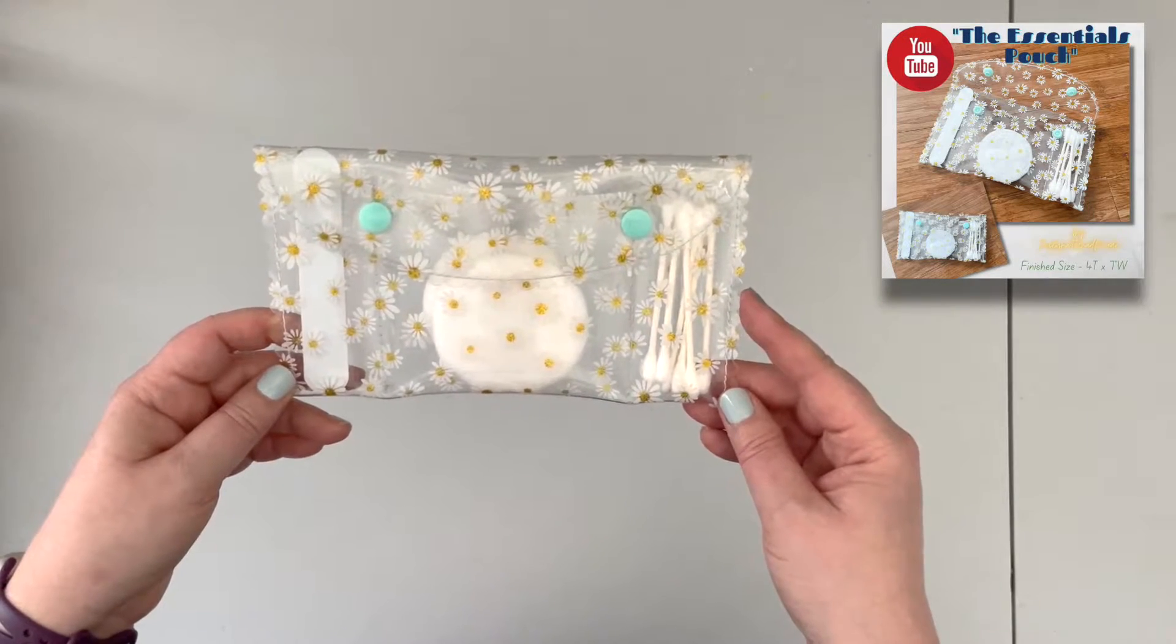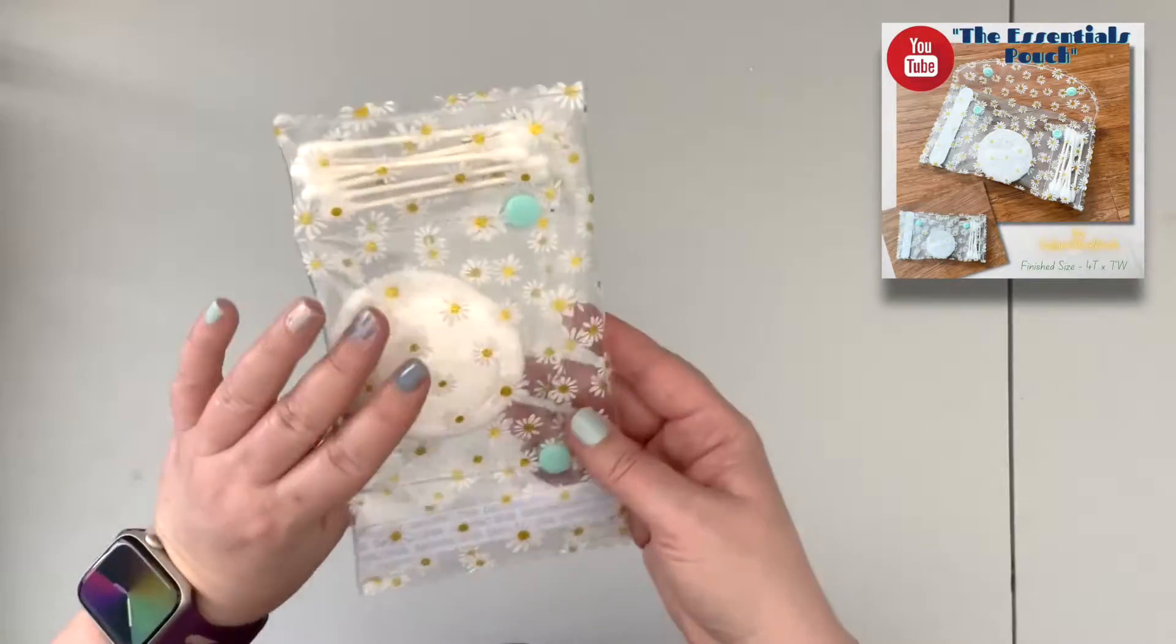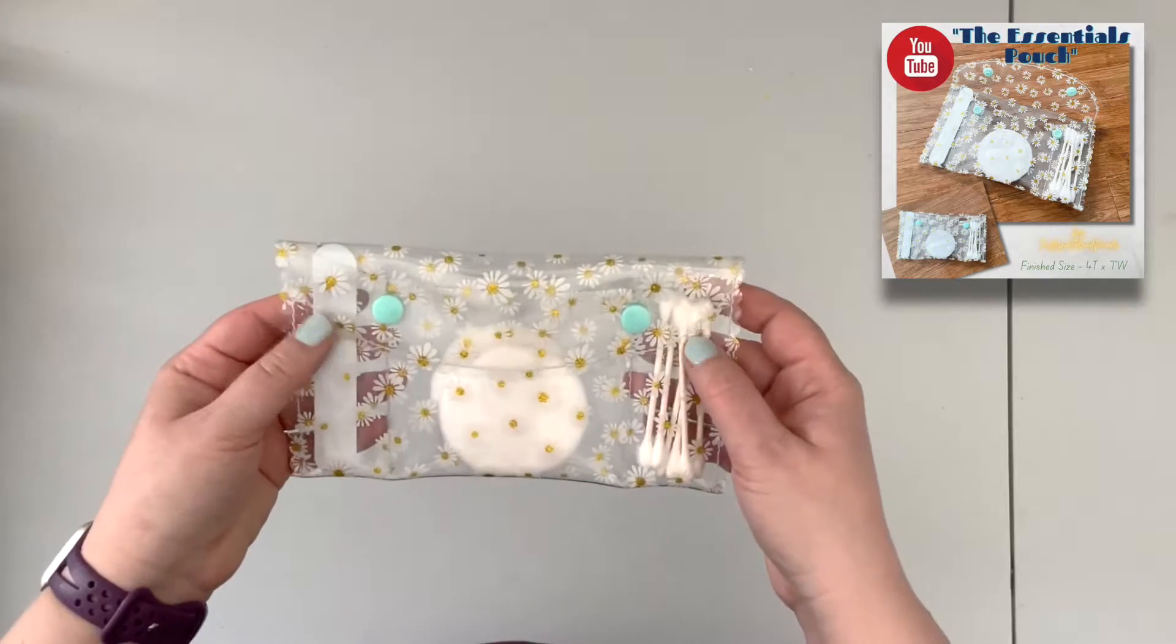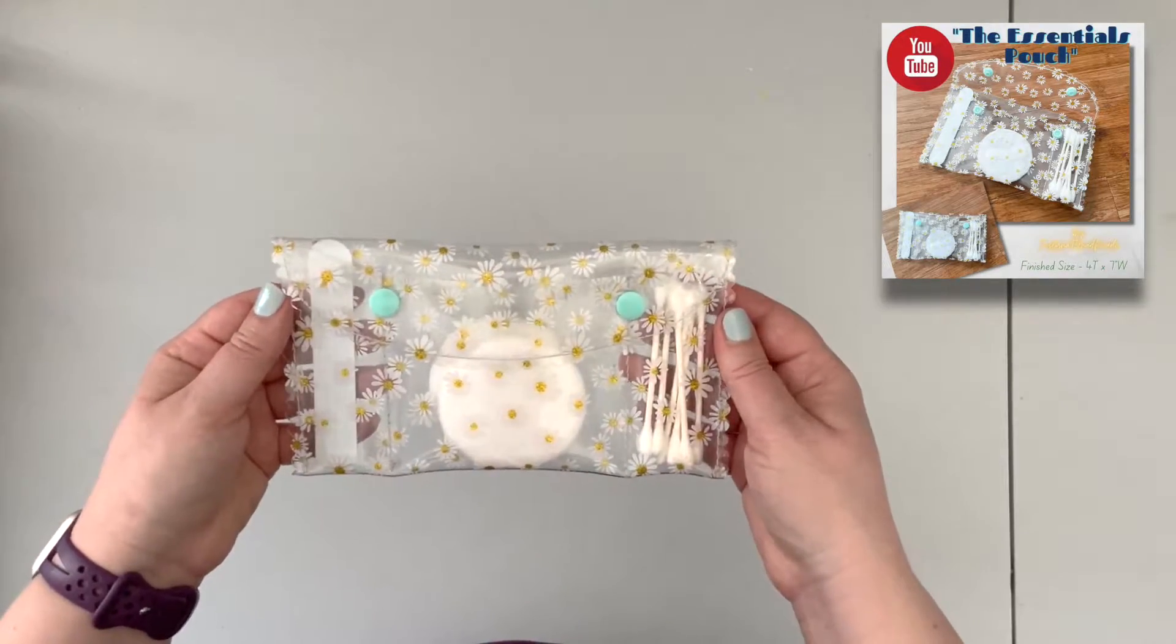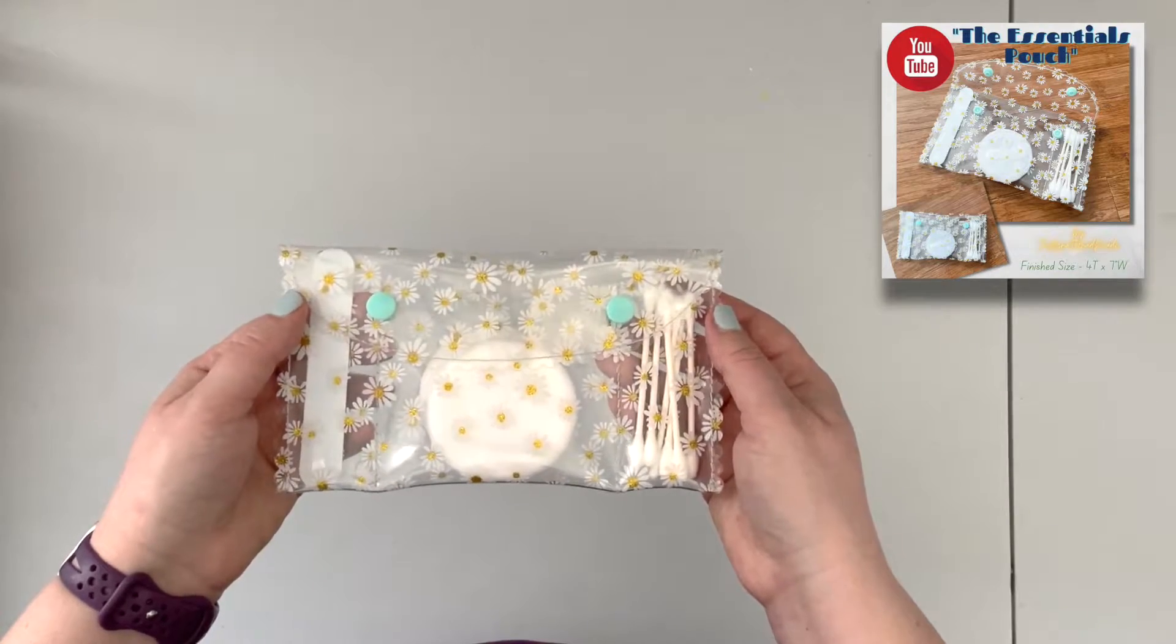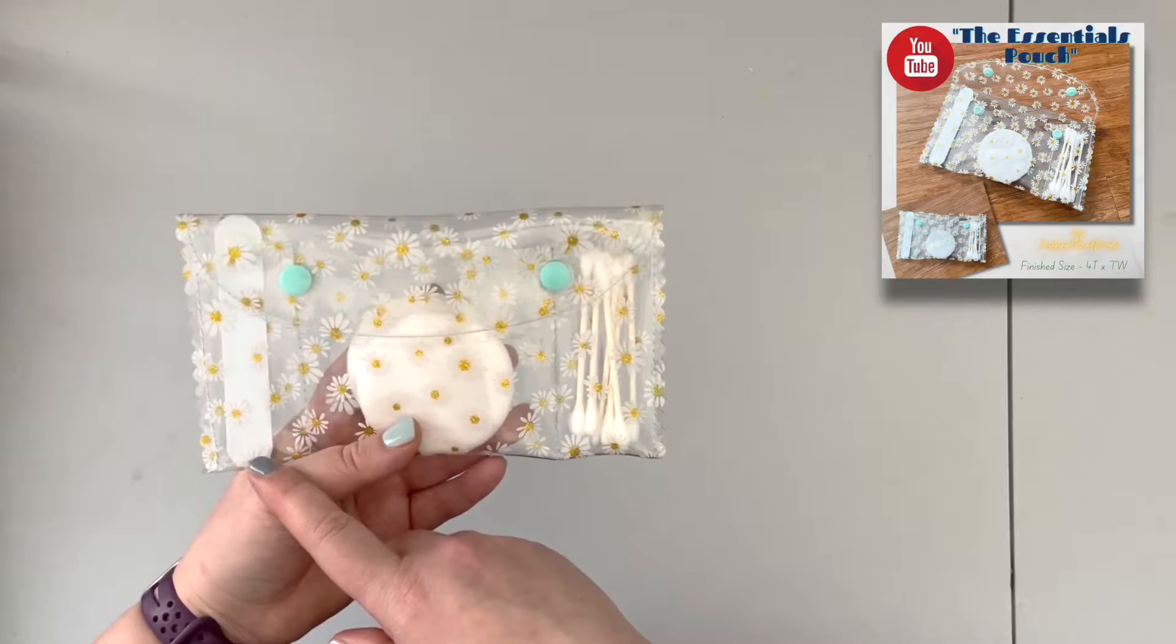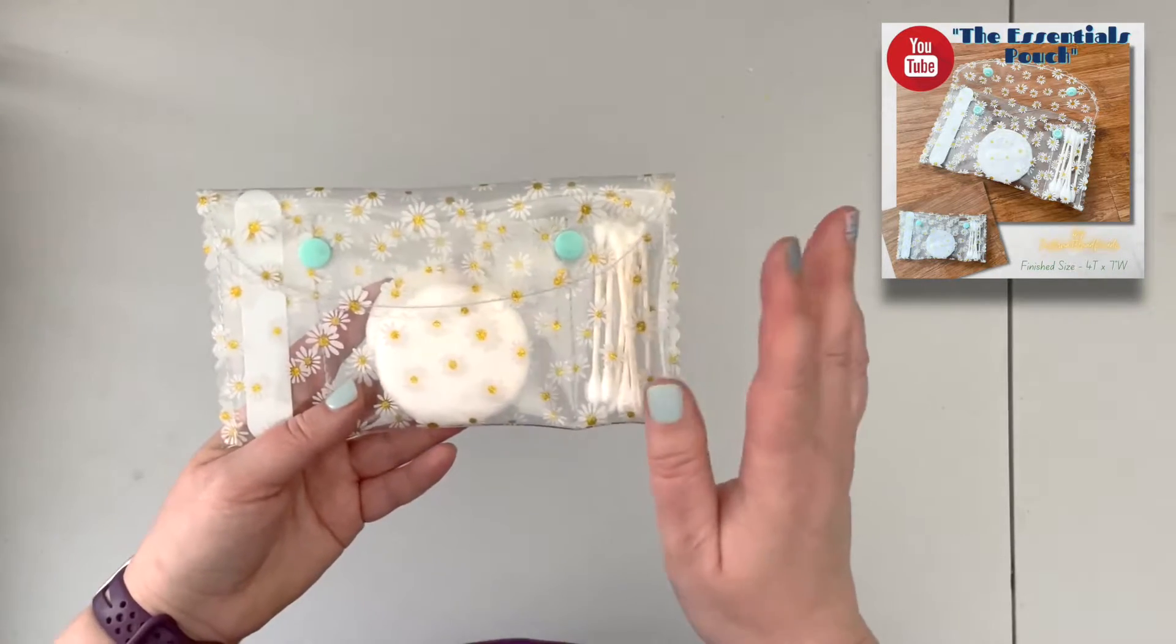As you can see there's really not much supplies needed. It's just a small piece of see-through or clear vinyl and two sets of snaps. You can use the plastic snaps that are easily accessible on Amazon in a set or you can use metal snaps, whatever you have on hand.